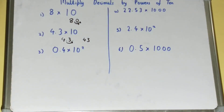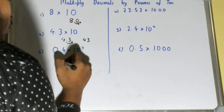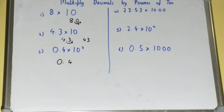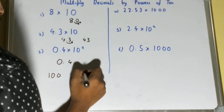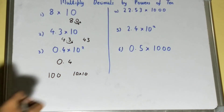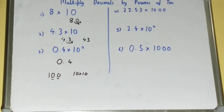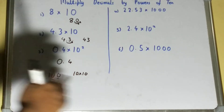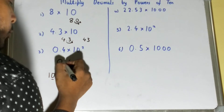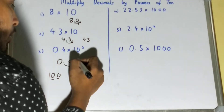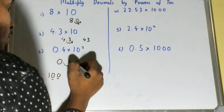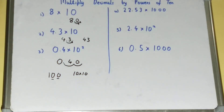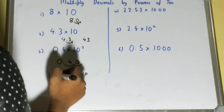Next, let's solve 0.4 multiplied by 10 raised to power 2. Now 10 raised to power 2 means 100, or 10 × 10 — it's the same thing. So we have two zeros, meaning we move two decimal places to the right. We can move one place because we have the digit 4 there, but for the second place we don't have a digit, so we put a zero. Your 0.4 becomes 40.